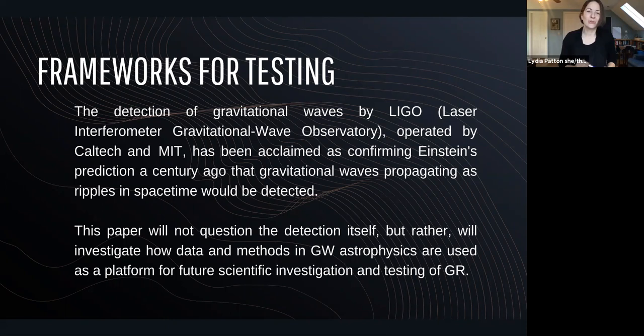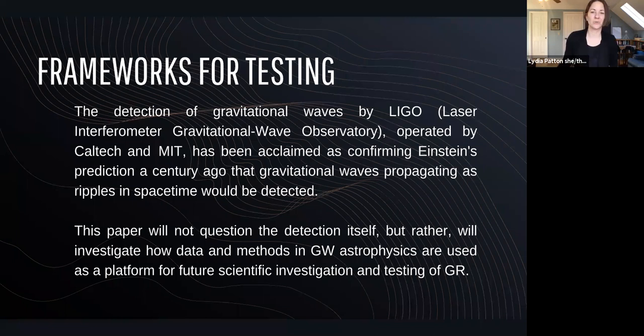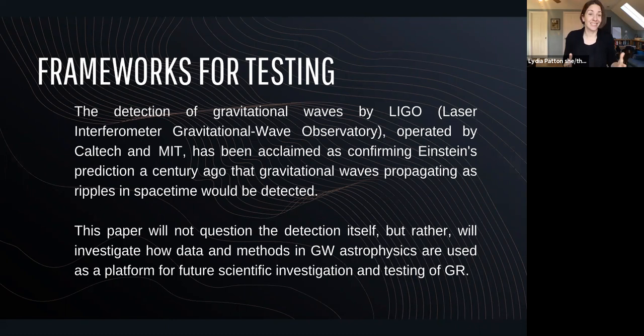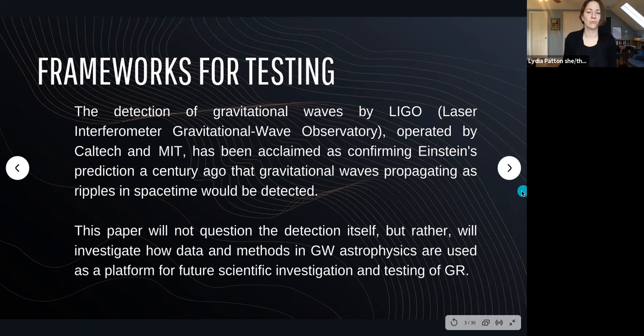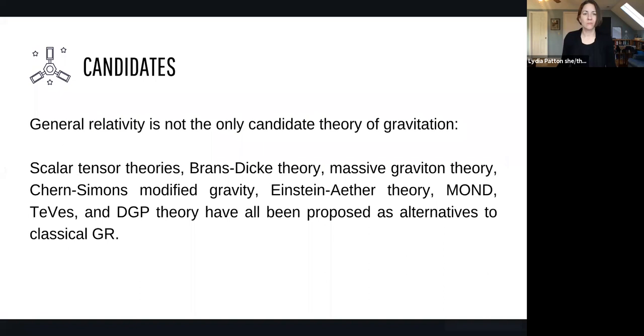First of all, the focus of my talk is the laser interferometer gravitational wave astronomy — LIGO — operated by Caltech and MIT, which has been acclaimed as confirming Einstein's prediction a century ago that gravitational waves propagating as ripples in spacetime would be detected. This paper does not question the idea that a signal or multiple signals have been detected, but rather will investigate how data and methods in gravitational wave astrophysics are used as a platform for future scientific investigation and testing of general relativity.